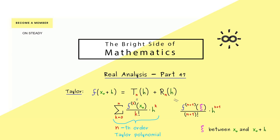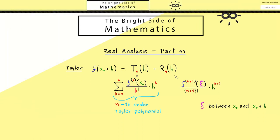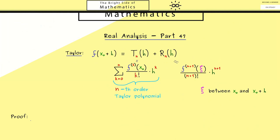This is Taylor's theorem in a nutshell and now we want to prove it. The proof will need some ideas but in the end it will not be hard to understand. The first thing we will need is an auxiliary function we can call capital F. We put the variable n into the index, and also h into the index, because we want to choose another variable name for the function — let's choose t.